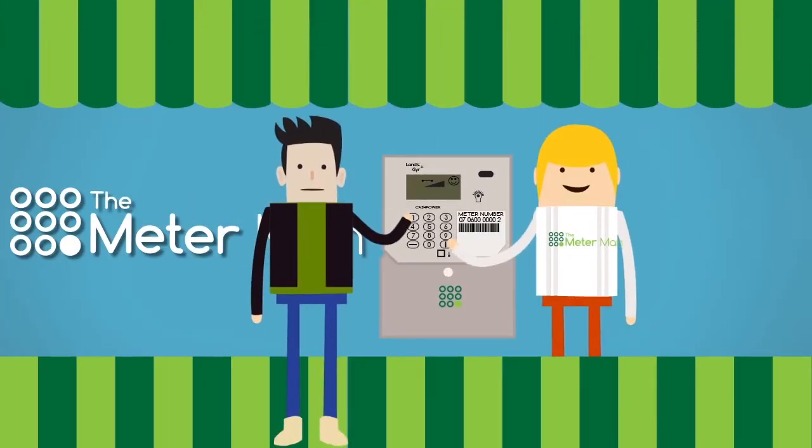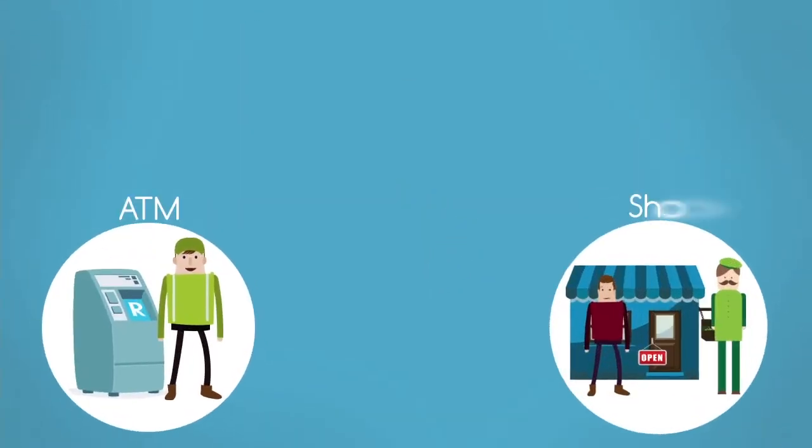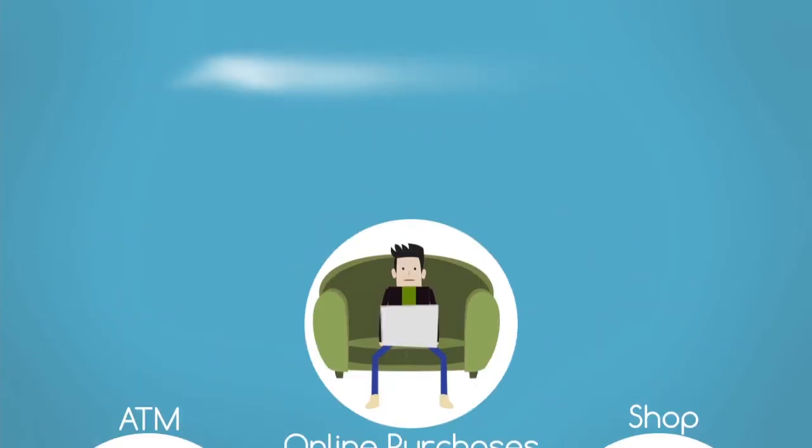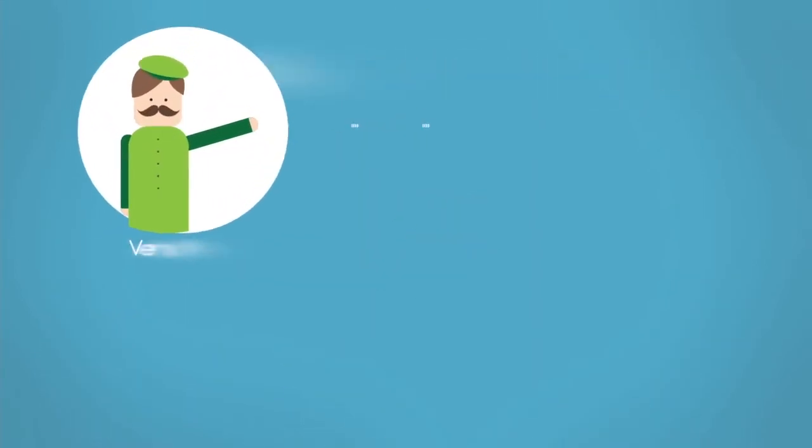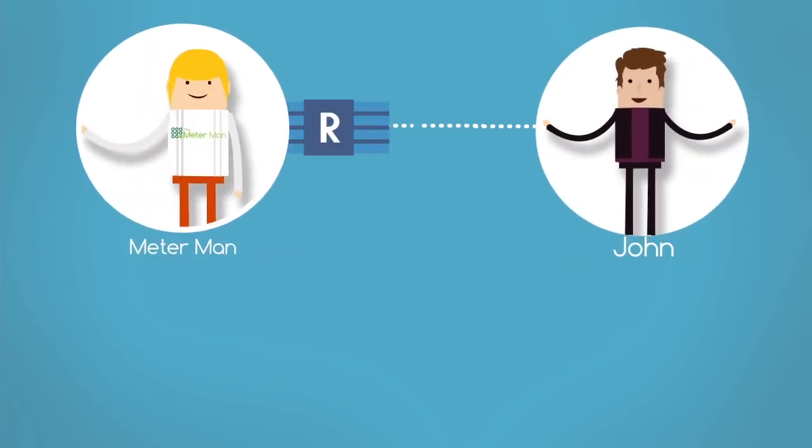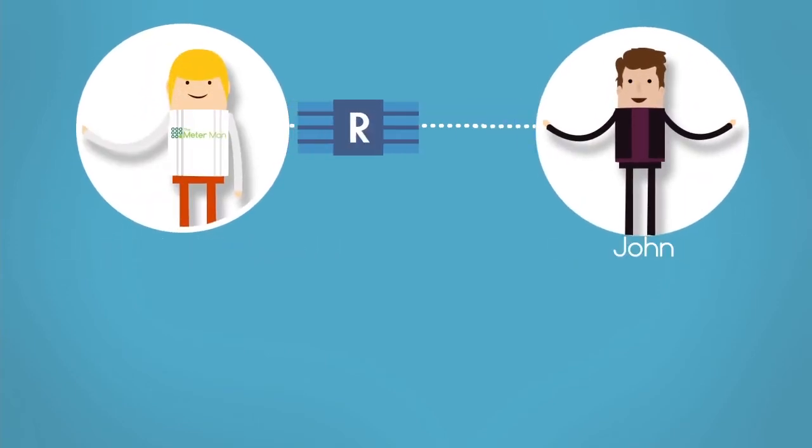He can conveniently purchase the electricity he needs at one of the many vendors near him. At the end of the month, the meter man will collect the electricity money Liam spent and pay those funds back into John's account before John receives a bill from the municipality.